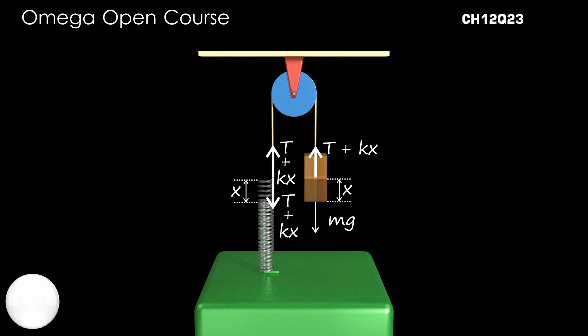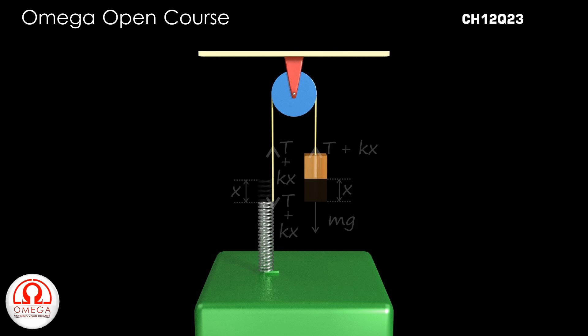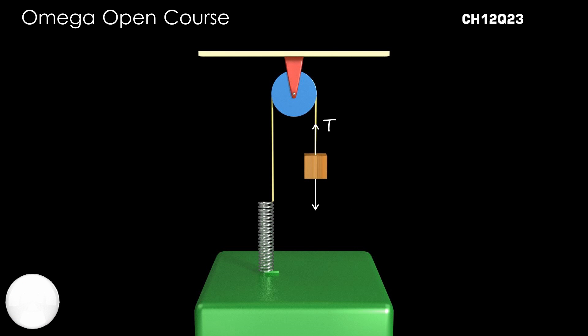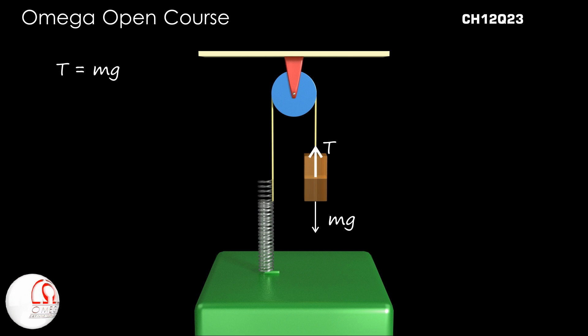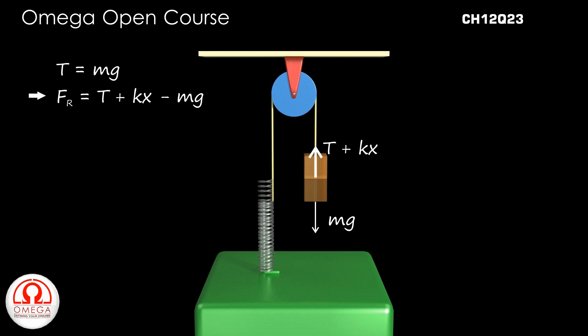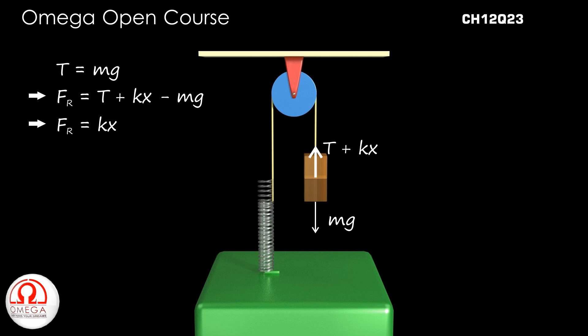But the gravitational force on the block is independent of the position of the block and hence remains the same. So, initially the upward force on the block was equal to the downward force on it. When the block is moved by distance x, the upward force increases by kx while the downward force remains constant. This means the net force acting on the block is kx in the upward direction. This force is the restoring force. Thus, when the block is displaced by x from its equilibrium position, the restoring force acting on the block is kx.